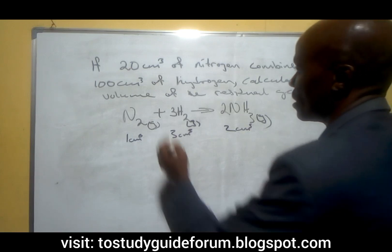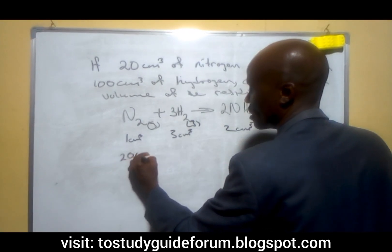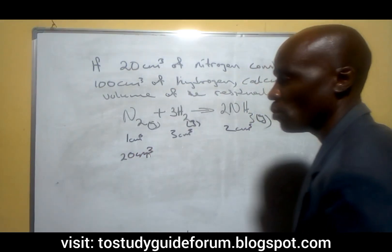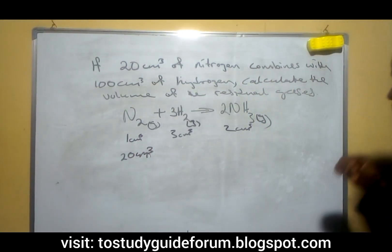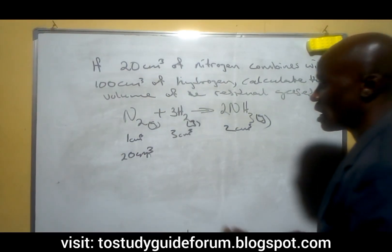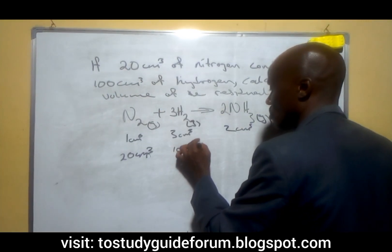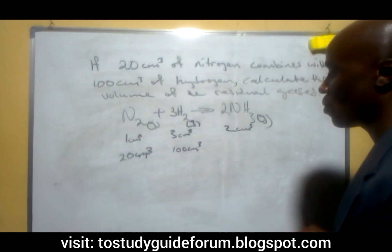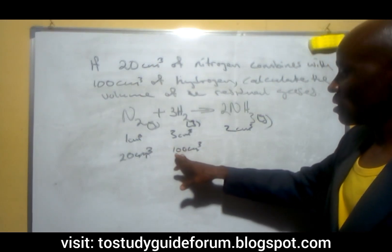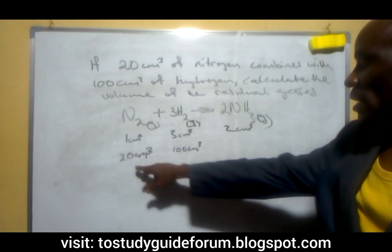Looking at the given volumes now: the reactant volume of nitrogen is 20 cm³ and the reactant volume of hydrogen is 100 cm³. If you look at that, we find out that one is going in excess — the hydrogen seems to be bigger than the other one.